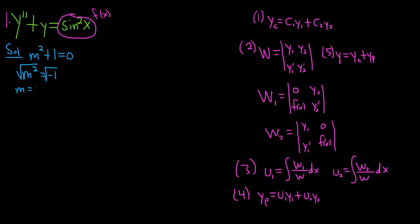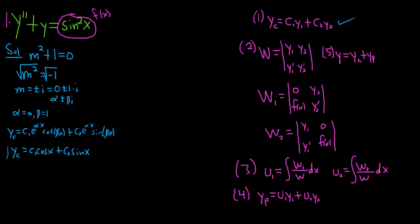So we get m equals plus or minus i. Recall that whenever you have complex conjugates, they have the form alpha plus or minus beta times i. And all of this alpha is equal to 0 and beta is equal to 1. And recall the formula for y sub c was c1 e to the alpha x cosine beta x plus c2 e to the alpha x sine beta x. Because alpha is 0, e to the 0 is 1. So we just get y sub c equals c1 cosine x plus c2 sine x. So now we can identify y1 and y2. But notice we've completed our first step. So one down.